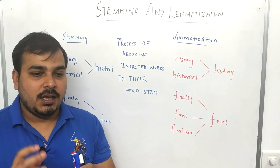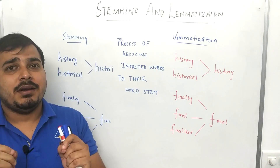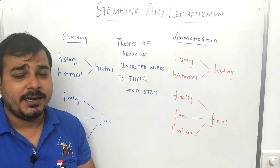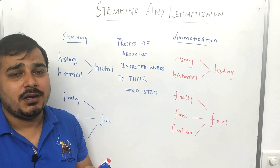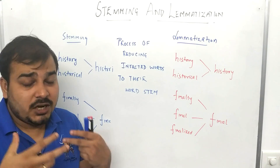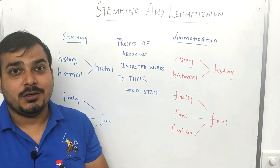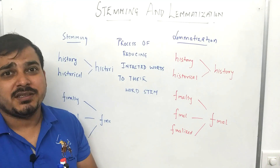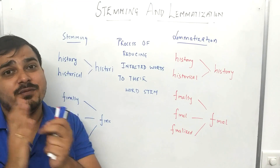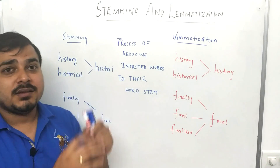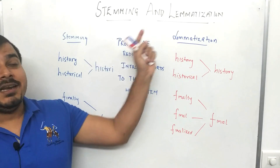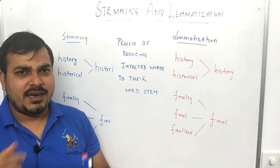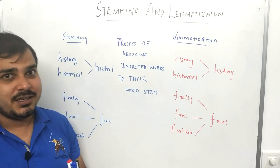Right now let us go ahead and try to understand stemming and lemmatization. One important thing about natural language processing: all our input data will be in the form of text data, and we cannot just give our text data to a machine learning model — the model will not understand that text data at all. So what we do is pre-process that data and convert it into some numerical representation, which we basically call vectors. My next video will cover bag of words, TF-IDF, and everything will be available in the playlist.